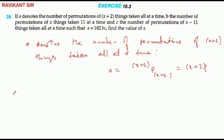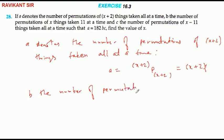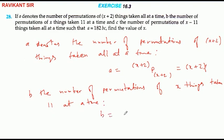अब आगे क्या कर रहे हैं — B जो है, the number of permutations of X things taken 11 at a time। आगे का मतलब B किसके equal है: X P 11 के। ठीक है।